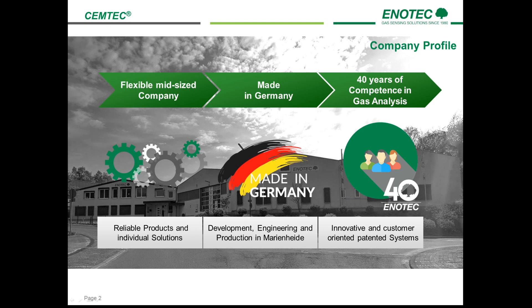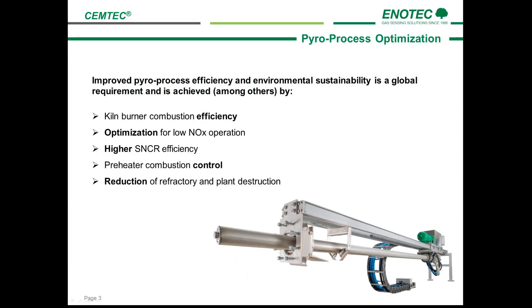We aim to produce the best products available on the market, and this focus has made us into the combustion specialists that we are today. Pyro process optimization is the aim of this webinar. Improved pyro process efficiency and environmental sustainability is a global requirement, which can be achieved by: number one, increasing the kiln burner combustion efficiency; number two, optimizing the process for low NOx operation; number three, increasing the SNCR efficiency; number four, controlling the pre-heater combustion.